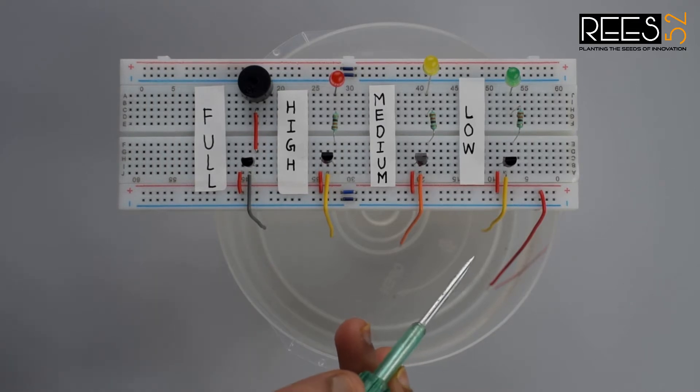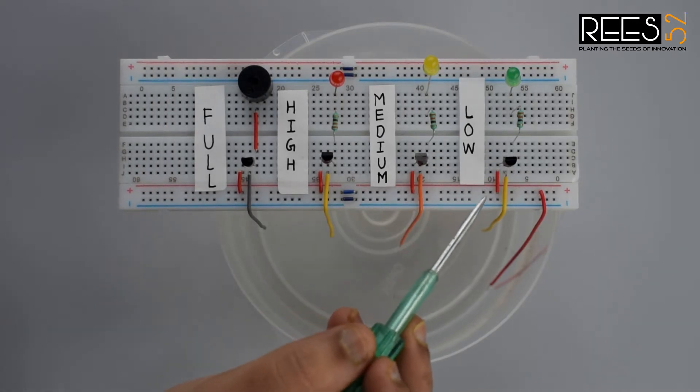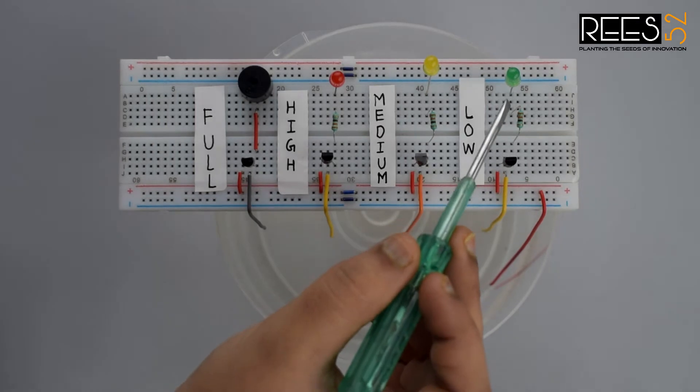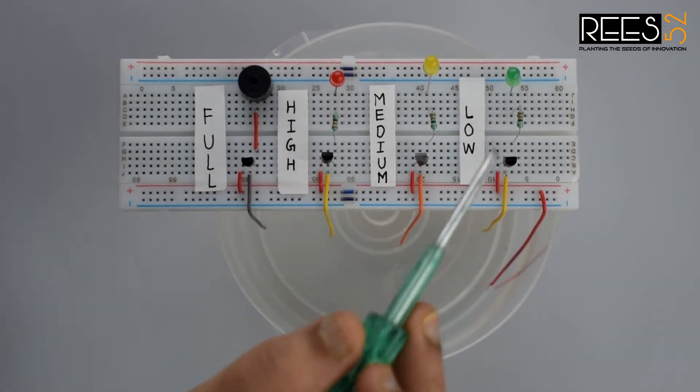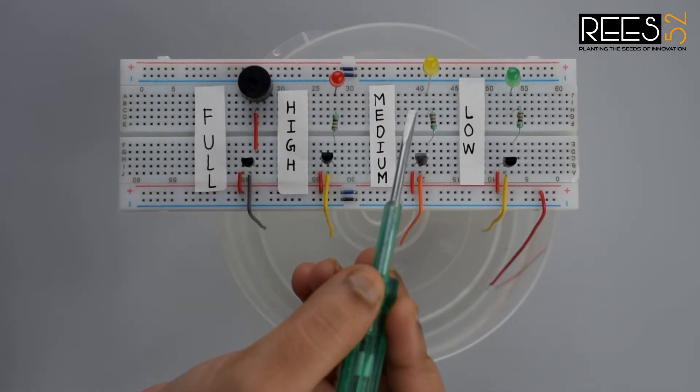which leads to the wastage of water. Though there are many solutions to it like ball valves which automatically stop the water overflow once the water tanks get full, but being an electronic enthusiast wouldn't you like an electronic solution for it? So here is a simple and handy project in which we will guide you to make a circuit.